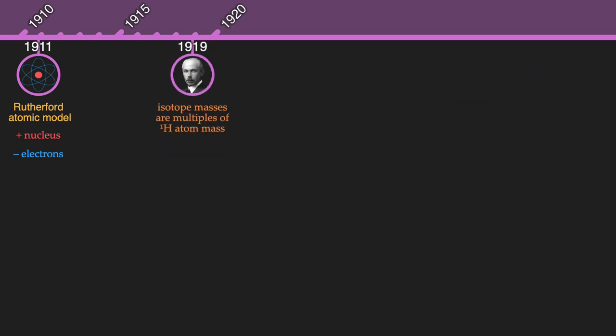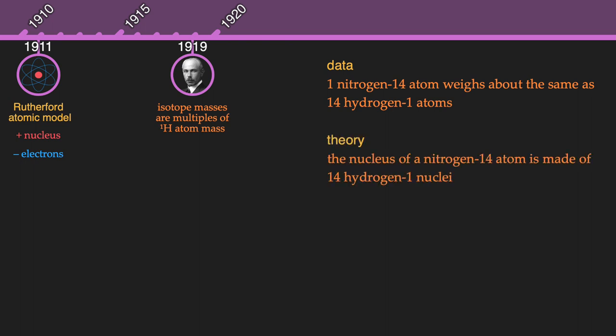This led scientists to suggest that the nuclei of all atoms were just bunches of hydrogen nuclei bound together, providing all the mass of the nucleus. So atoms of the element nitrogen, for example, have a mass of about 14 times the mass of the hydrogen atom. So they must be composed of 14 hydrogen nuclei all bound together.